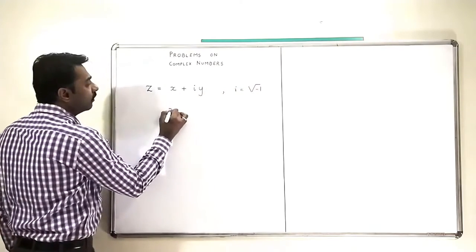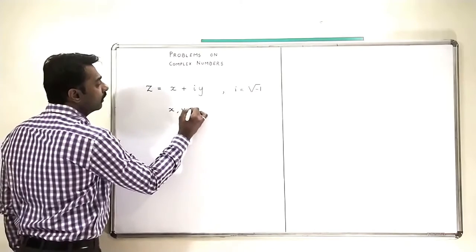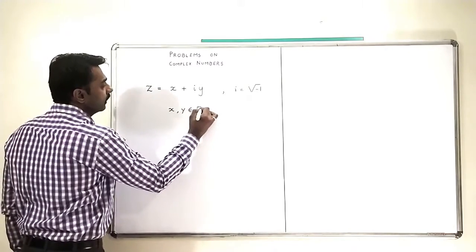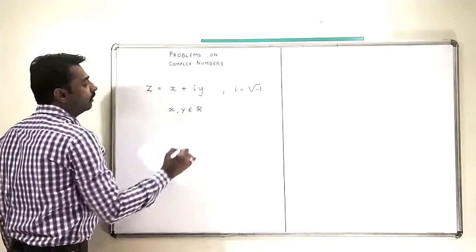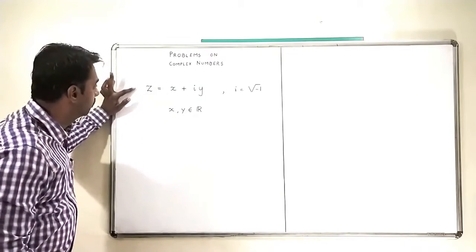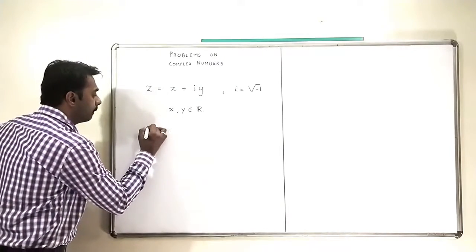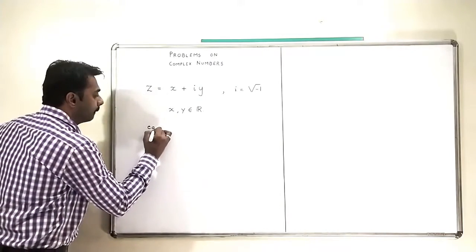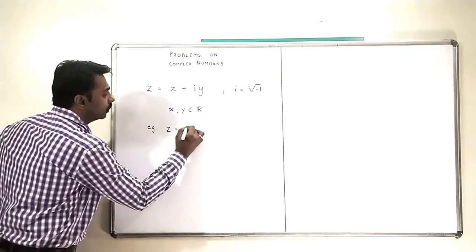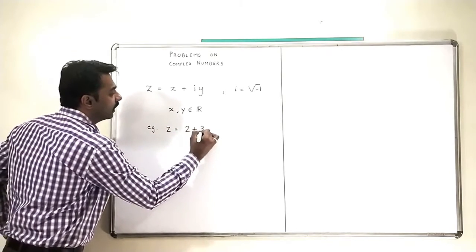This X and Y, they are real numbers. This Z is called as a complex number. For example, Z is equal to 2 plus 3i.